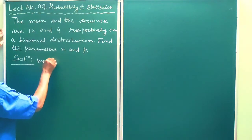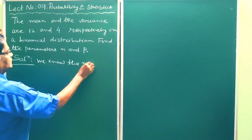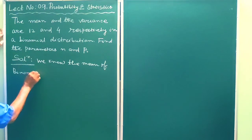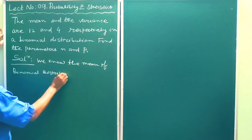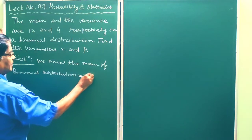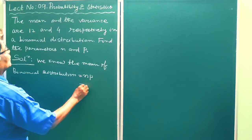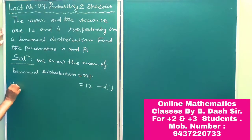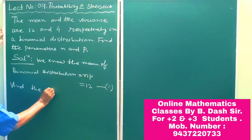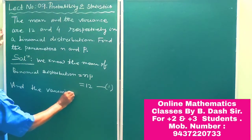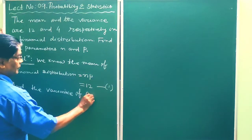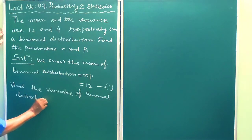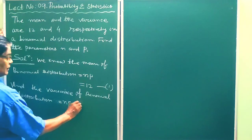We know the mean of the binomial distribution is equal to np, which is equal to 12. This is equation 1. And the variance of the binomial distribution is npq, which is equal to 4. This is equation 2.